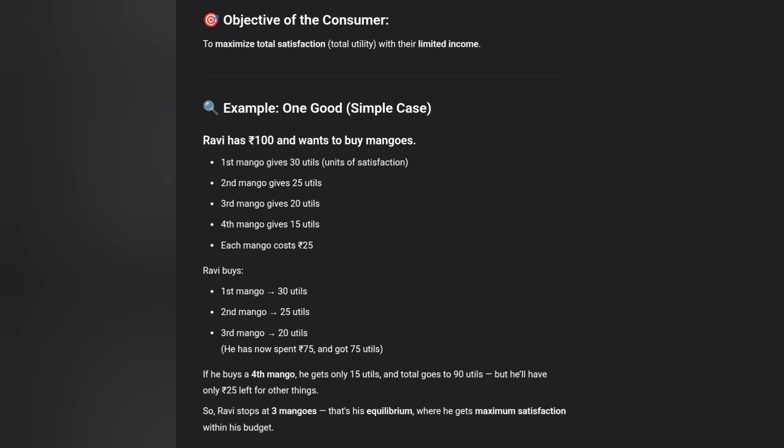Think of eating biryani — the first bite gives a lot of satisfaction, but there is a limit. That is the Law of Diminishing Marginal Utility. Ravi has now spent 75 rupees and got 75 utils from three mangoes. If he buys a fourth mango, he gets only 15 utils more, totaling 90 utils, but will have only 25 rupees left for other things. So Ravi stops at three mangoes — that is his equilibrium, where he gets maximum satisfaction within his budget.